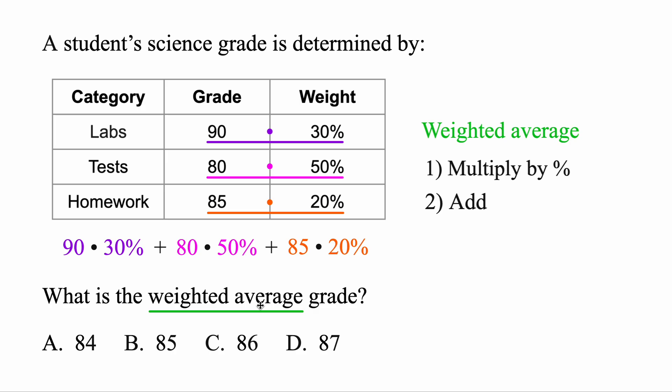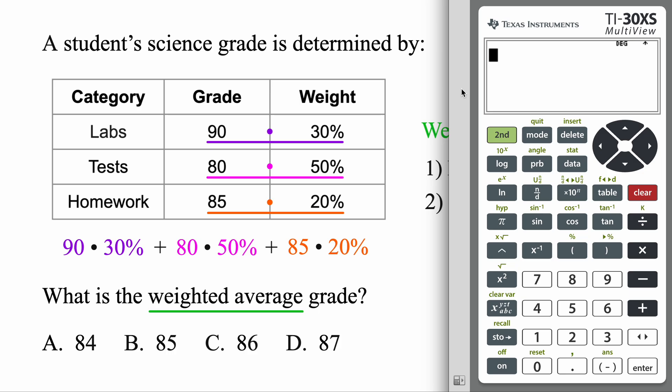And that'll calculate the correct weighted average for us. And this is the exact calculator that they'll give you. So let's go ahead and start. We've got 90 on labs. That represented 30% of our grade. To get the percent sign, just hit second, left parenthesis there. And keep going. Plus, we got 80 on our tests, that represented 50%. Again, second, and then that button, get the percent. Plus, homework 85, and that represented our 20%. Once we've got that typed in, just go ahead and hit enter.